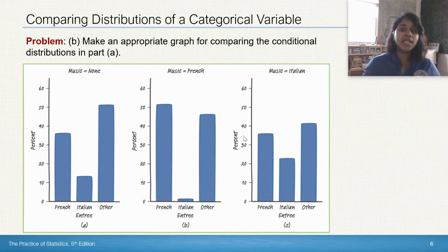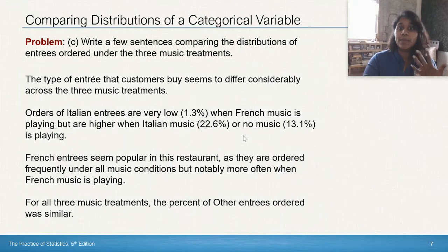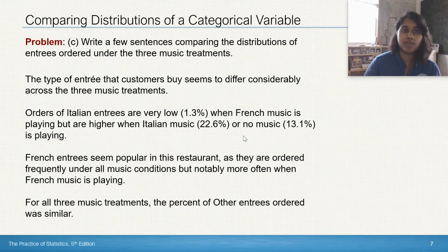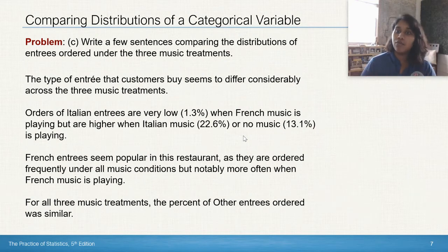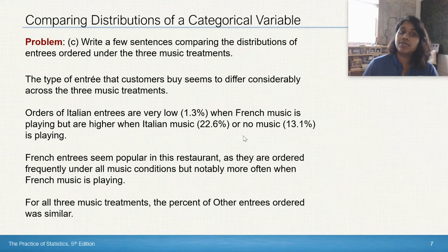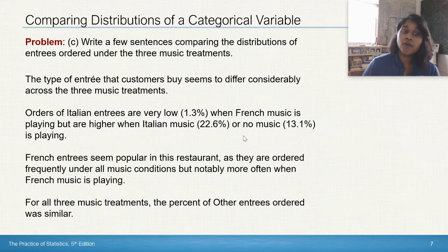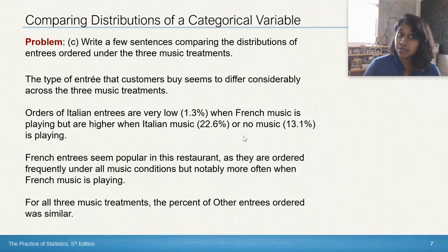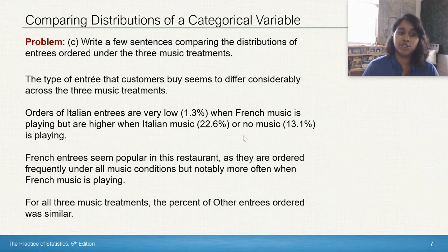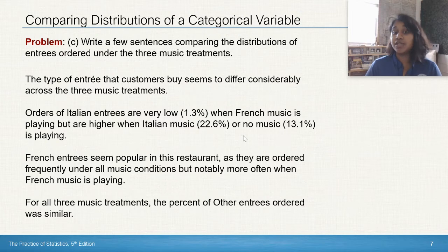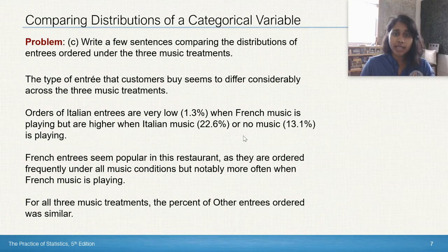If we did a bar graph of each, we can immediately see some really cool things happening with those entrees being ordered by the music. The type of entree that customers buy seems to differ considerably across the three music treatments. Orders of Italian entrees are very low when French music is playing, but they're higher when Italian music or no music is playing. French entrees seem to be popular as they're ordered frequently under all conditions, but most notably, it's ordered more often when French music is playing. For all three music treatments, the percent of other entrees ordered was similar.